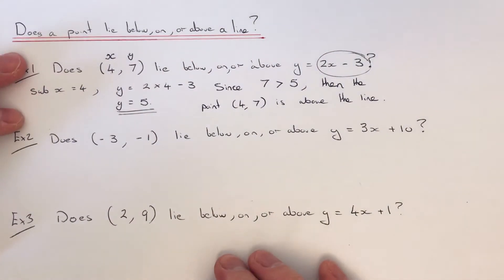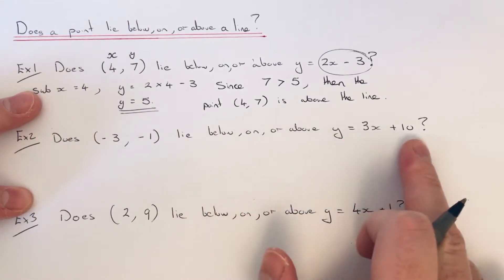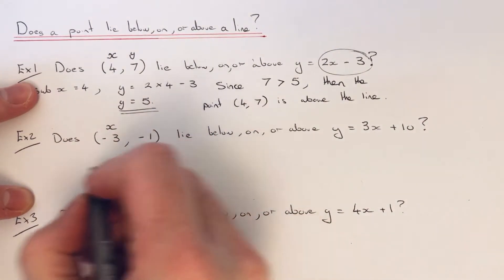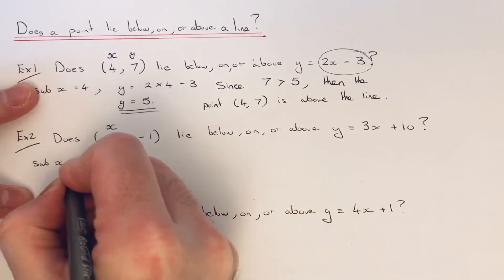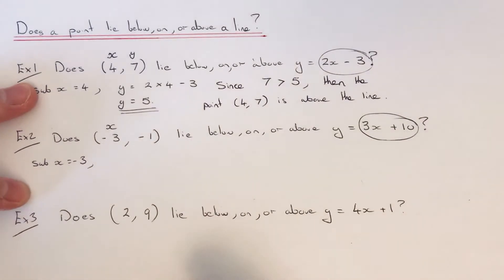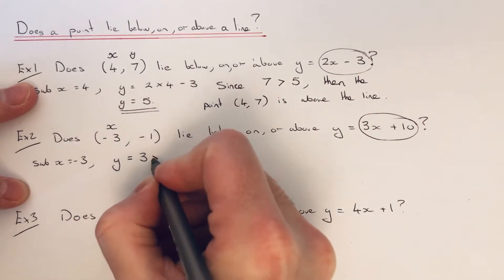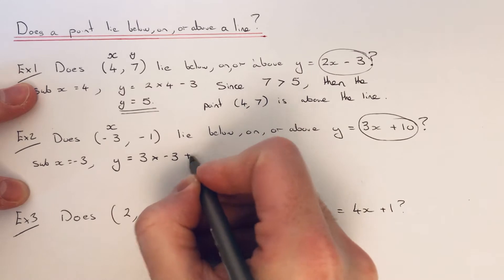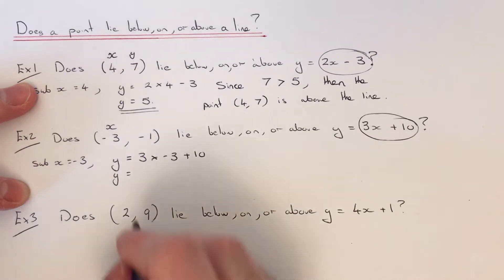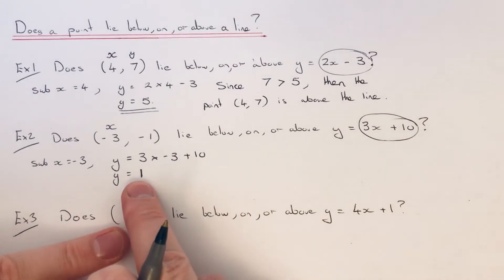Example 2: does the point minus 3, 1 lie below, on or above the line y equals 3x plus 1? Again, we just need to substitute our x coordinate, which is minus 3, into our equation to work out the y coordinate on the straight line. So y equals 3 times minus 3 plus 10. So 3 times minus 3 is minus 9, add 10 gives an answer of 1. So our y coordinate is 1.